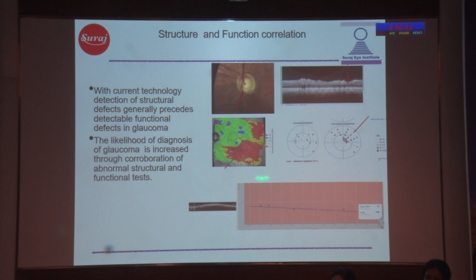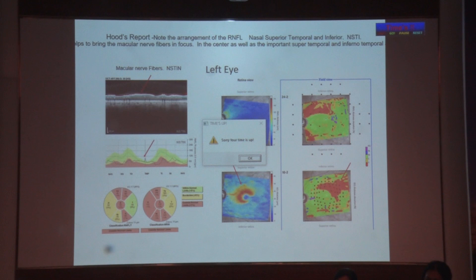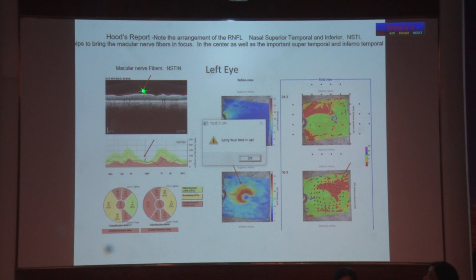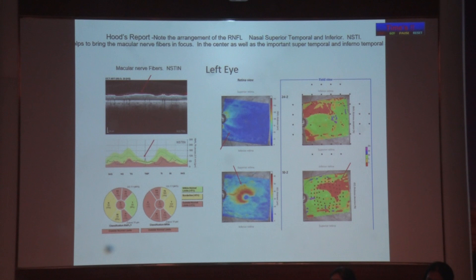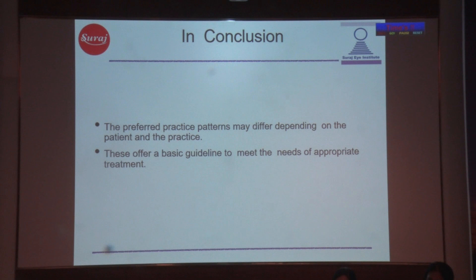Hood's report is very important. Instead of having the nasal fibers at center, it brings the macular fibers to center — because you need to see the macular fibers since they serve central vision. It shows the ganglion cell loss deviation map and flips the retina so that though the loss is inferior, it appears superiorly — matching with the visual field loss, since superior visual field loss is related to inferior damage. This way you get the ganglion cell loss matching with the visual field loss. Preferred practice patterns may differ depending on the patient and the practice, and this is a basic guideline to help meet appropriate treatment needs.